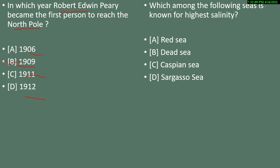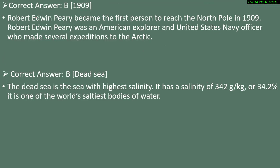Question 10: which among the following seas is known for the highest salinity? Options are Red Sea, Dead Sea, Caspian Sea, or Sargasso Sea. The correct answer is Dead Sea, option B.